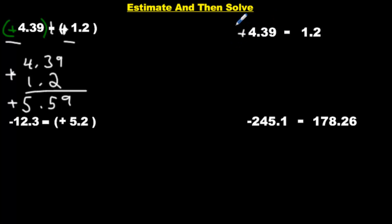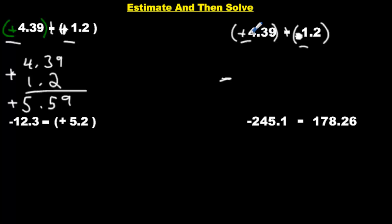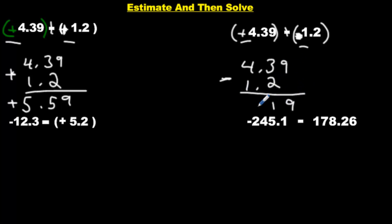Now we have 4.39 — let's put our symbols in — that's positive. But we have subtract a 1.2, which is a positive 1.2. We don't like subtraction questions, we want to turn them into addition by flipping the signs: this becomes positive and this becomes negative. Now we have positive and negative — they're different, they don't get along, so we're going to subtract. Big number comes first. The only thing we need the signs for is to decide if we're adding or subtracting — once we figure that out, we imagine the signs don't exist. 4.39 minus 1.2: 9 take away 0, 3 take away 2, and we get 3.19. Since 4 is bigger and positive, so is our answer.